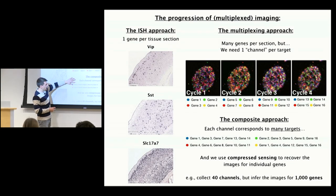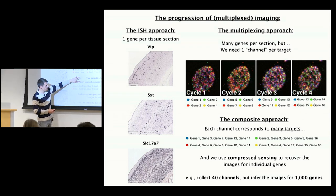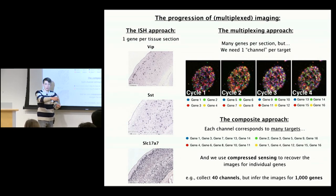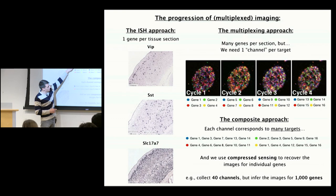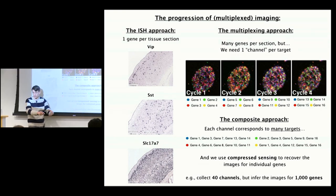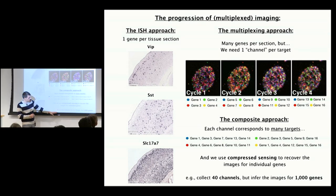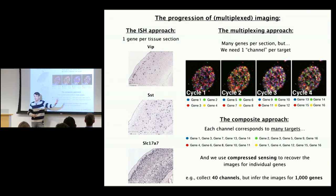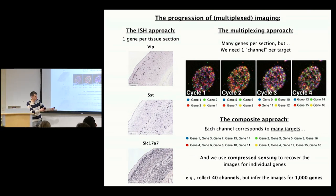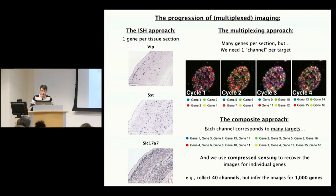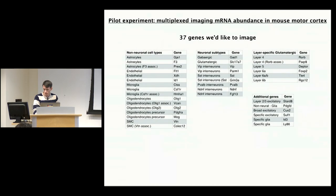The idea is to collect composite images designed this way — we think of those as the compressed representation of our data. When scaled up, it might be nice to use 10 cycles of four-color imaging, giving 40 composite images of the same tissue section, and decompress that to infer hundreds or maybe even a thousand different protein levels. For RNA, we'd like to scale it up even more. We're not there yet, but I will show results of some pilot studies.